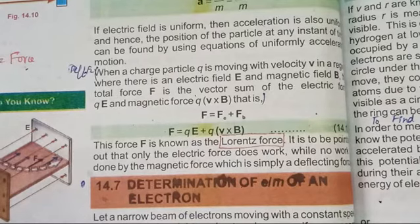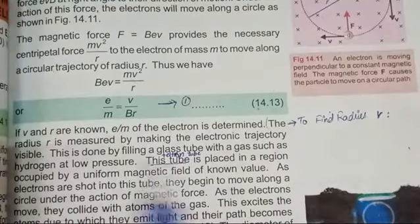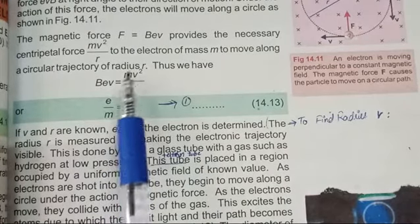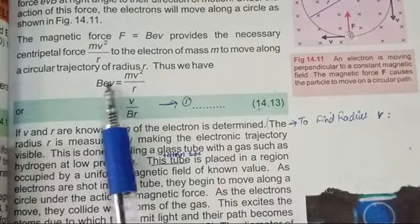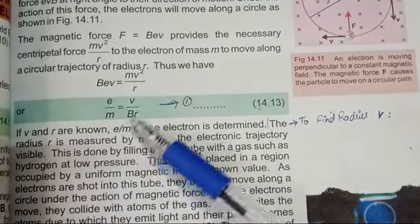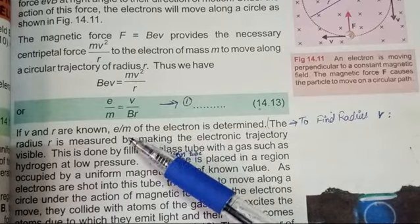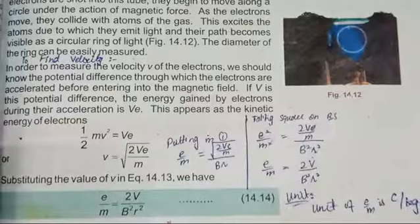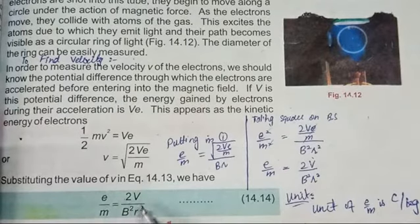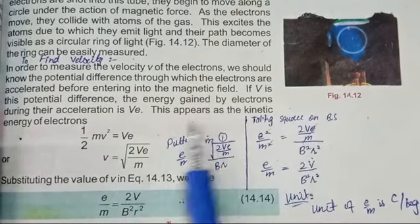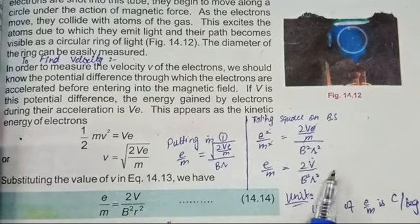Another important short question: calculate the value of the charge-to-mass ratio. If the question asks you to prove that e/m = V/(BR), then you solve just a few steps. But if the question asks you to prove that e/m = 2V/(B²R²), then you have to solve further steps. I have solved it in your book for you.